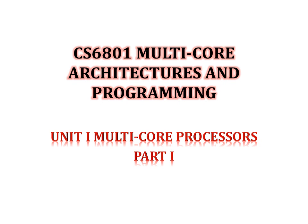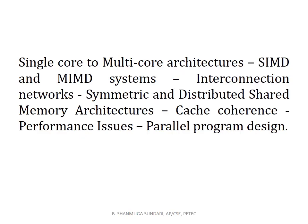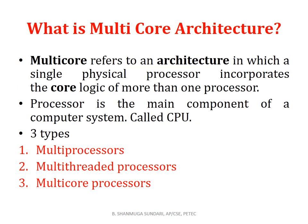Welcome students. Multi-core architecture and programming is a Part 1 slide from Unit 1. Single core architecture works on a single core processor, whereas multi-core refers to an architecture in which a single physical processor incorporates the core logic of more than one processor. A processor is the main component of the computer system, also called the CPU.